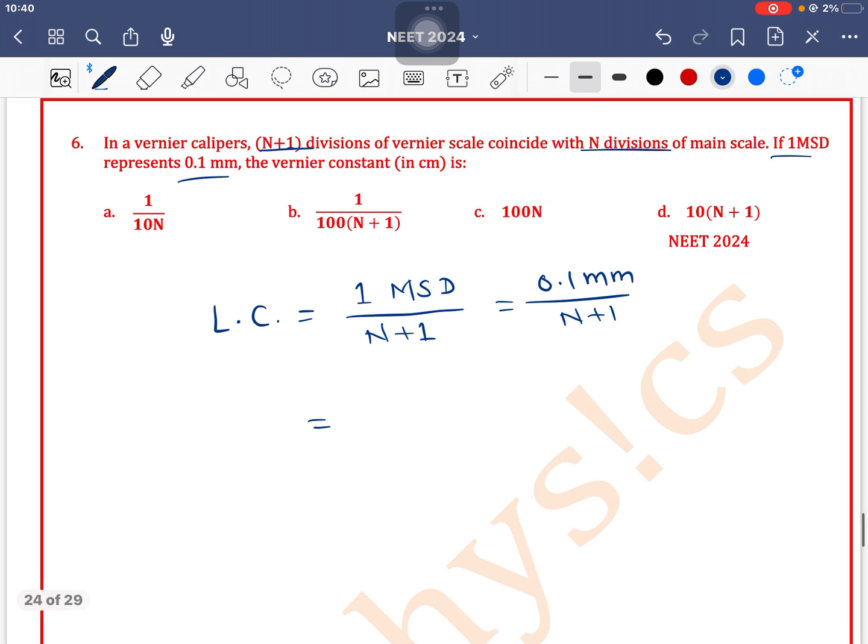To convert to centimeter, we can write 0.1 as 10 to the power minus 1, which is 10 to the power minus 3 meter divided by N+1, or 10 to the power minus 2 centimeter divided by N+1. This gives us 1 divided by 100 times N+1 centimeter. So option B is the correct one.